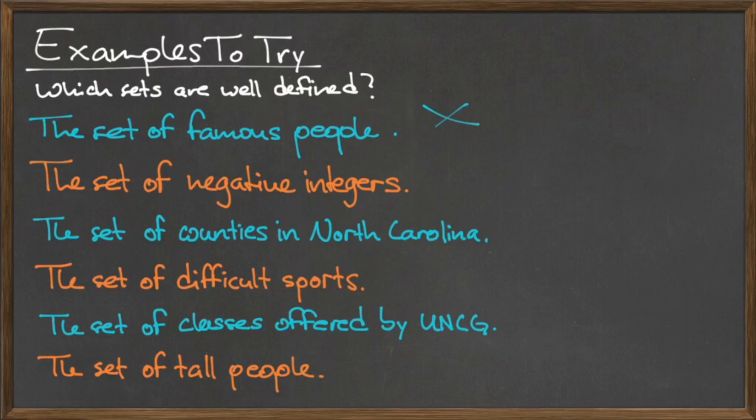Of the following sets, the set of negative integers, the set of counties in North Carolina, and the set of classes offered by UNCG are all well-defined sets, while the rest are not.